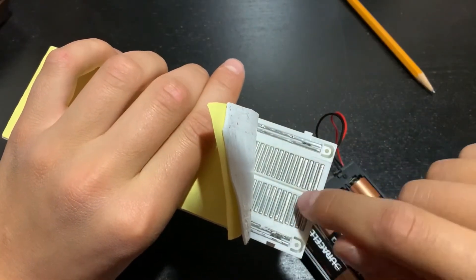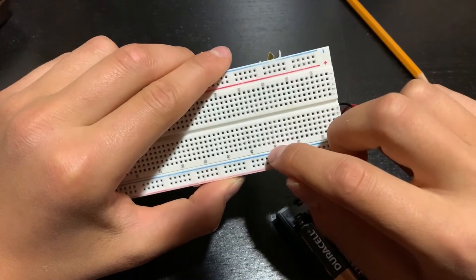Since these are the horizontal rows, this rail will all be connected.